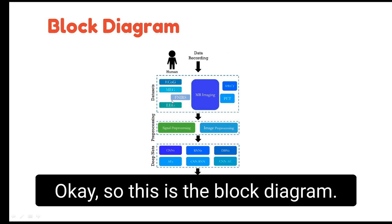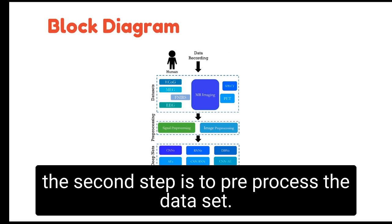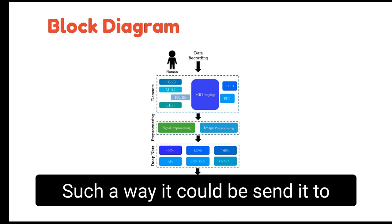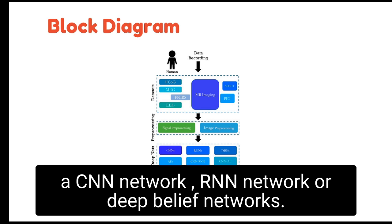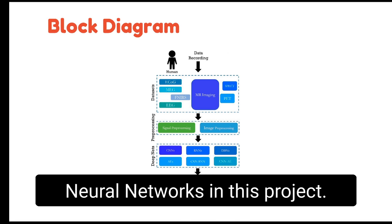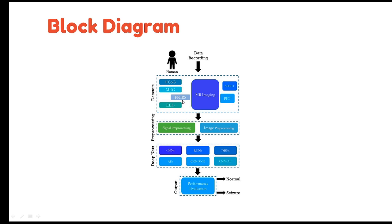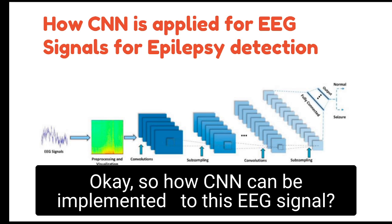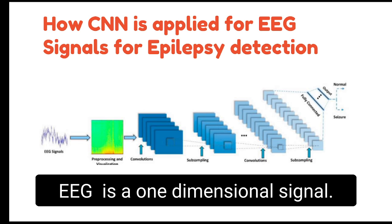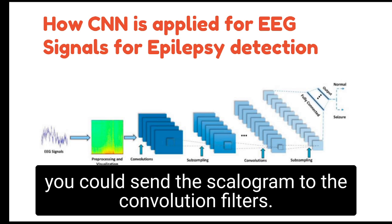The block diagram shows that the first step is to get the dataset, and the second step is to pre-process it so it can be sent to a CNN network, RNN network, or deep belief network. We have used convolutional neural networks in this project. The EEG signal is a one-dimensional signal, so it has to be converted to a two-dimensional signal using a scalogram, which is then sent to the convolution filters.